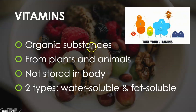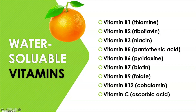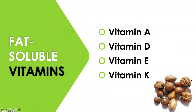First, vitamins are organic substances. They come from plants and animals and are not stored in our body. There are two types: water-soluble and fat-soluble. The water-soluble vitamins are vitamin B1, B2, B3, B5, B6, B7, B9, B12, and vitamin C. The fat-soluble vitamins are vitamin A, D, E, and K.